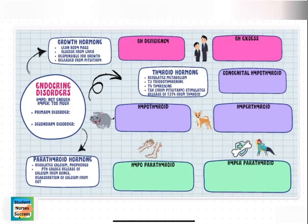Part 1 will cover growth hormone, thyroid, and parathyroid, and Part 2 will cover ADH and the adrenal cortical hormone disorders. So let's get started with our blank map.